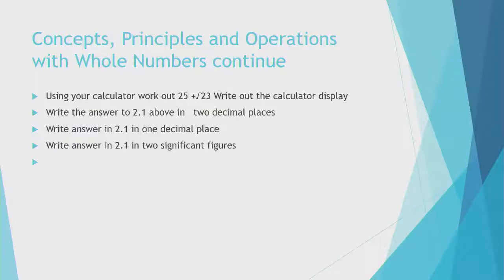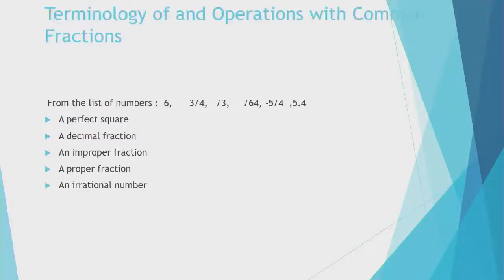Using your calculator, work out and write out the calculator displays. Here you are supposed to use your calculator and write out what it displays. Then write the answer to 2.1 above in two decimal places. Write the answer in 2.1 in one decimal place. Write the answer in 2.1 in two significant figures.